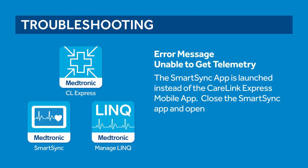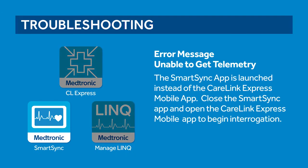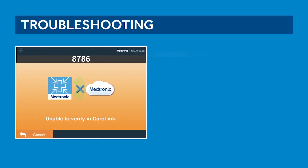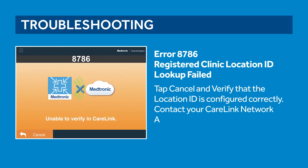Unable to get telemetry: the SmartSync app or the Link Mobile Manager app is launched instead of the CareLink Express mobile app. Close the SmartSync or Link Mobile Manager app completely and open the CareLink Express mobile app to begin interrogation. Error 8786: registered clinic location ID lookup failed. The location ID could not be found or matched. Tap cancel and verify that the location ID is configured correctly. Contact your CareLink network administrator for more help.